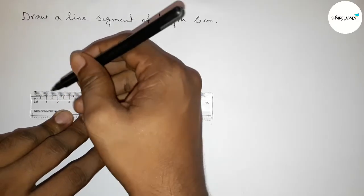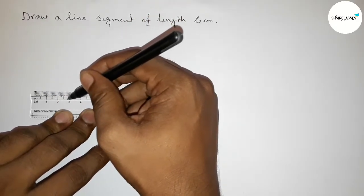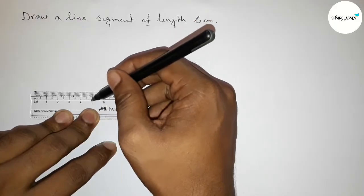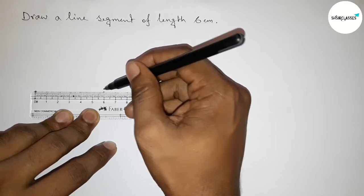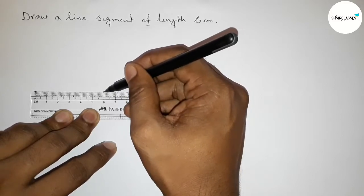Now counting this. So this is starting 0, 1, 2 centimeter, 3 centimeter, 4 centimeter, 5 centimeter, and this is 6 centimeter length. So marking 6 centimeter and joining this line.